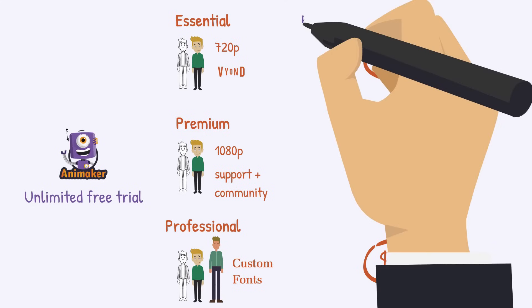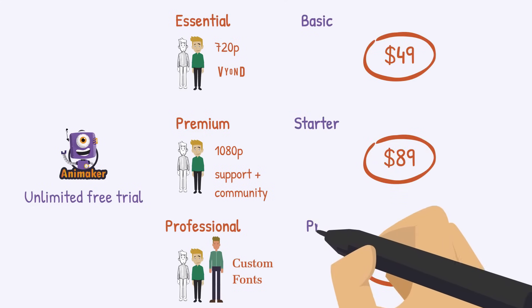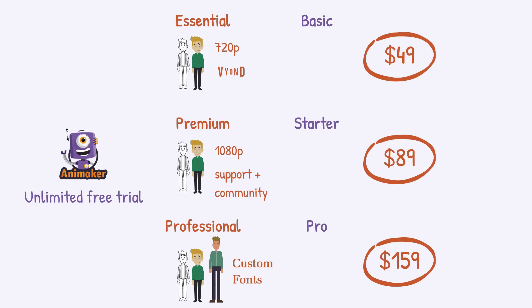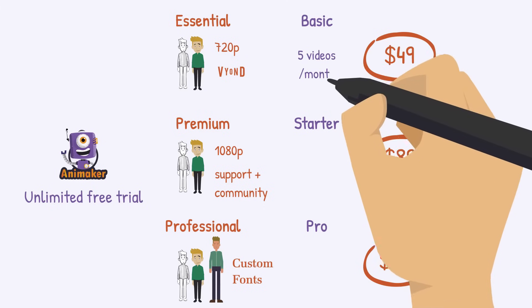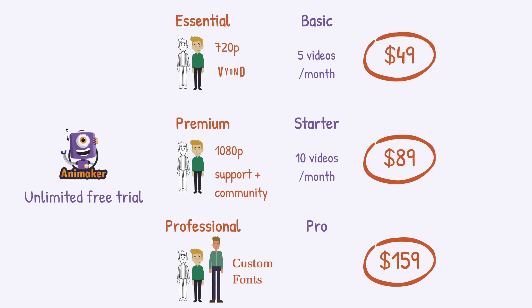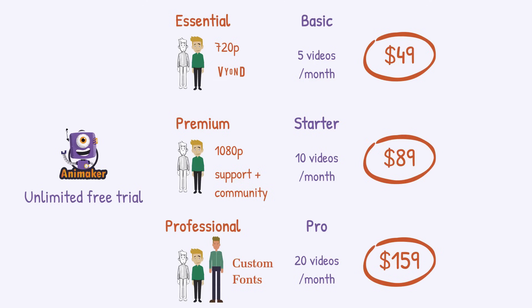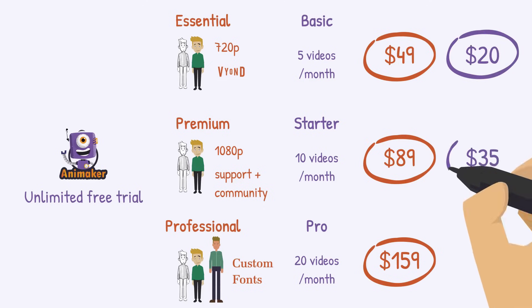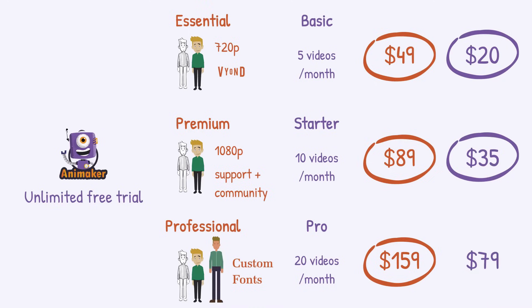When you do upgrade, you can choose the Basic, Starter, or Pro plan. The most important difference is the number of videos you can export — there's a limit on that with Animaker: 5, 10, or 20 videos per month. For unlimited downloads, you need the Enterprise plan and have to contact Animaker directly — so you know it's expensive. The regular plans are $20 a month for Basic, $35 for Starter, and $79 for Pro.